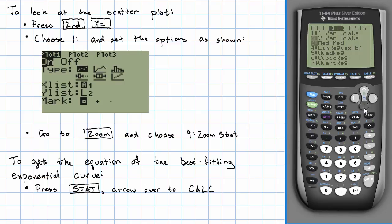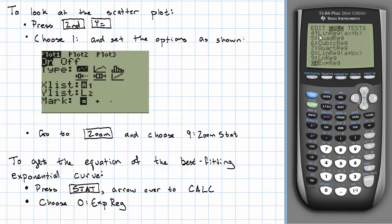But now I'm going to arrow over to calc, and now I'm going to scroll down and I'm going to choose the command that says ExpReg. Notice that there's also a LinReg. If you wanted to get the line of best fit, you could use that LinReg command.